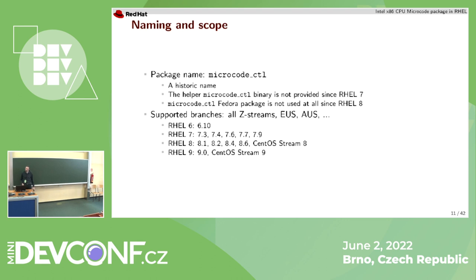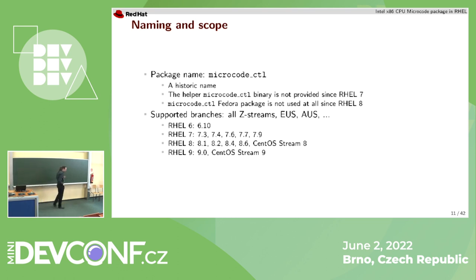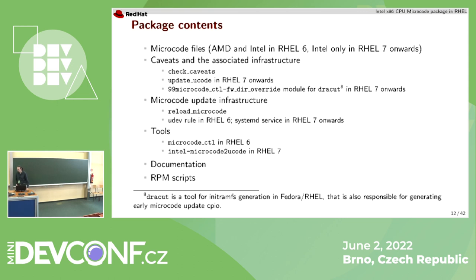The package is named microcode_ctl, even though there is no longer a microcode_ctl binary for uploading microcode to the kernel — originally Intel distributed microcode in a weird text format while the kernel accepted binary format. The package is supported on various RHEL streams. In addition to the microcode update files themselves, the package contains caveats, scripts related to microcode updates, tooling, documentation, and RPM scripts.